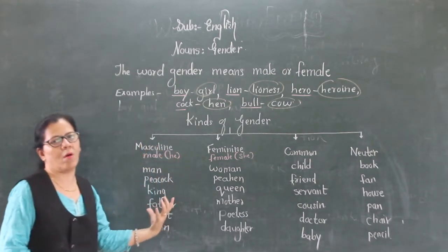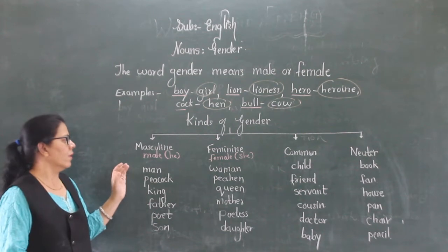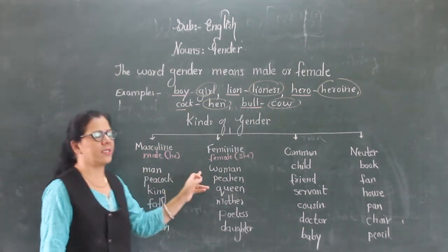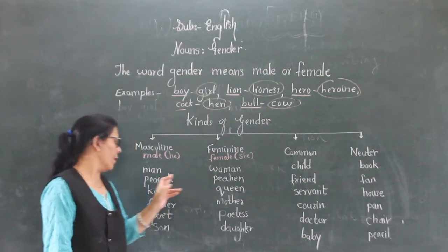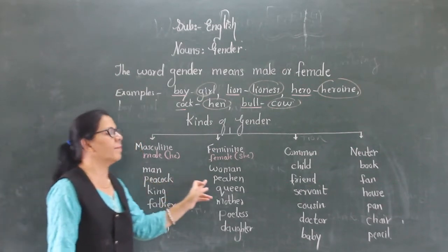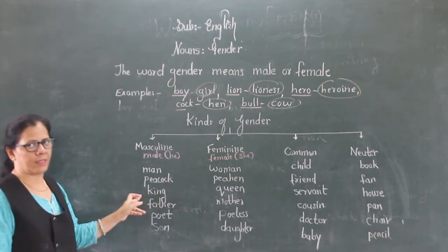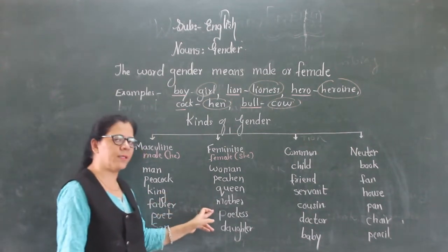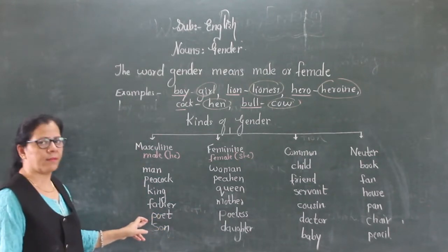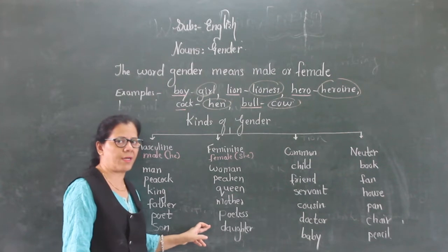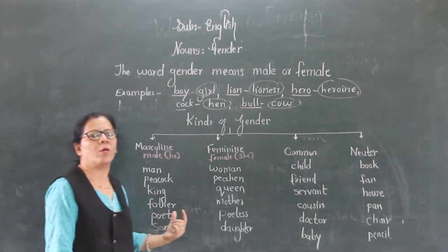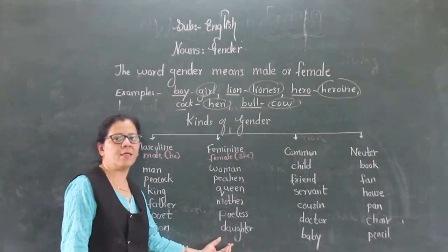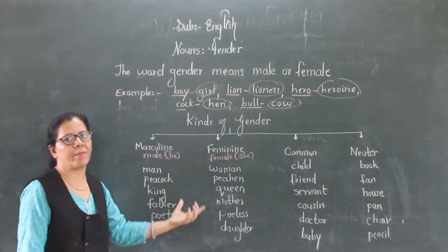Now let's have a look at examples. Man is male and the opposite is woman, that is female. Peacock is male, peahen is female. King is male, queen is female. Father is male, mother is female. Boy is male, poetess is female — one who writes poetry is a poet. Son is male and daughter is female. So this was about masculine and feminine gender.